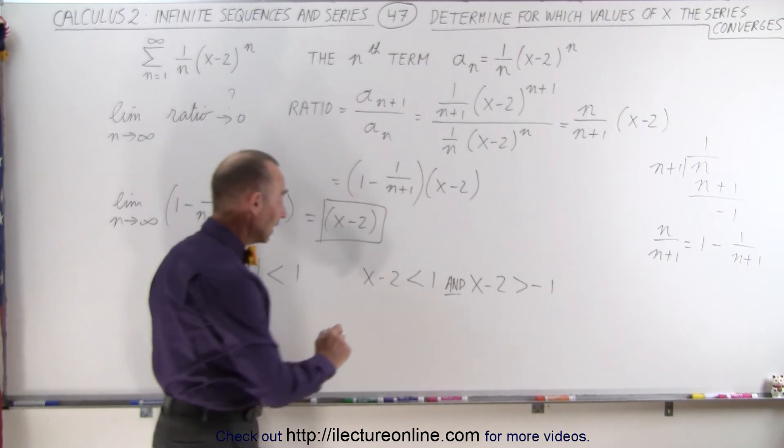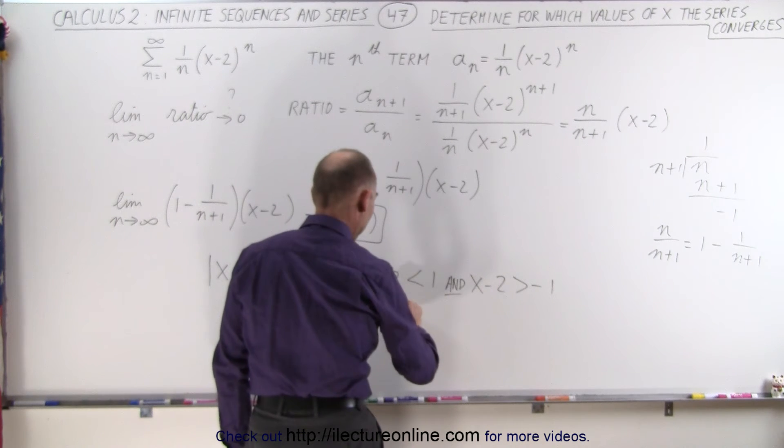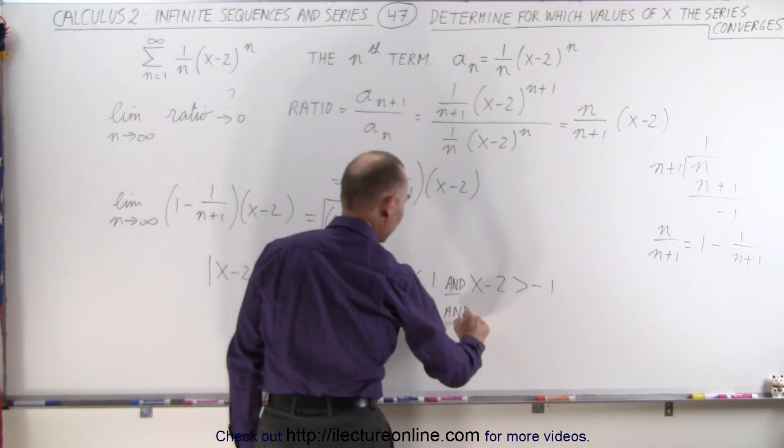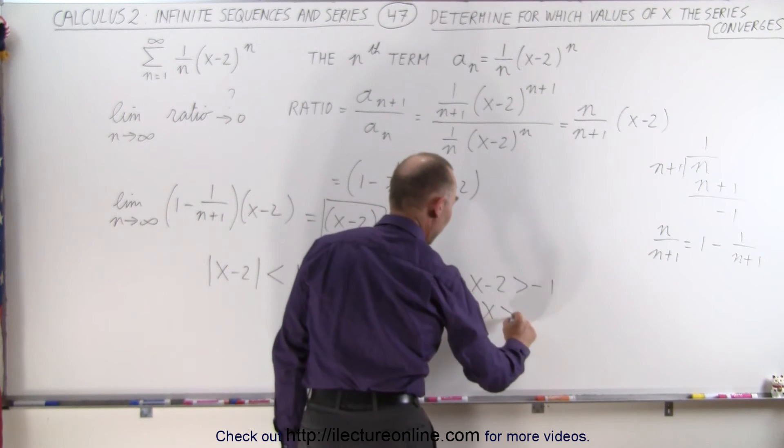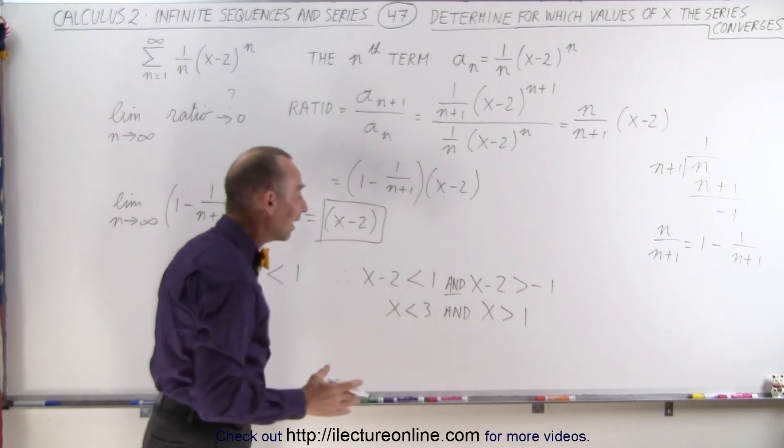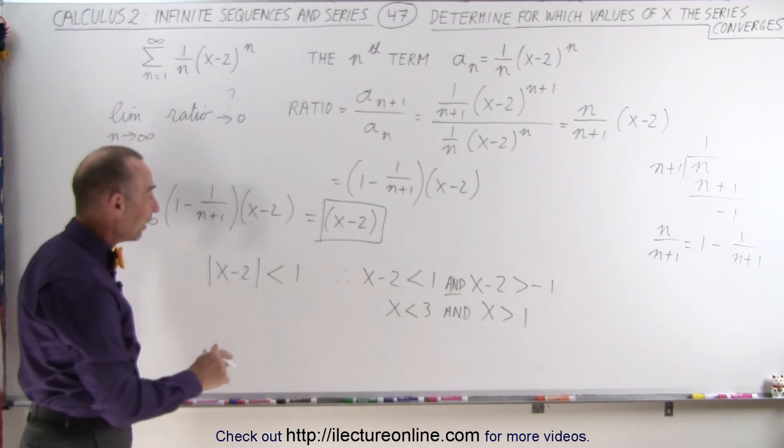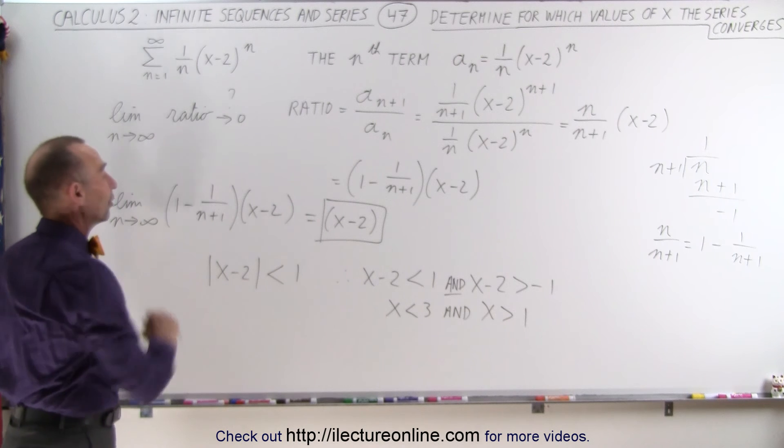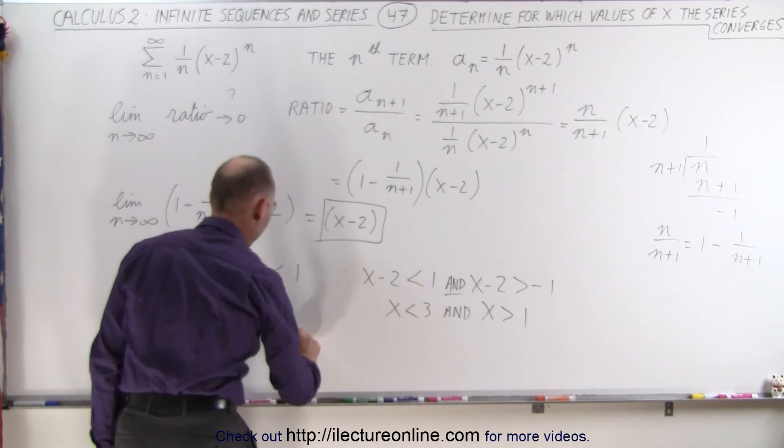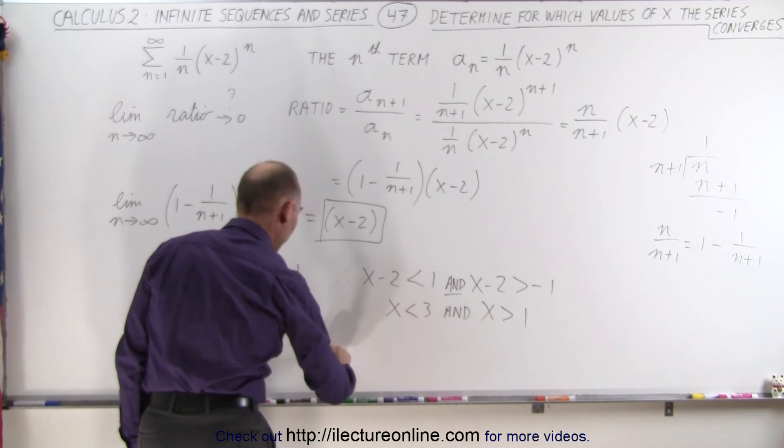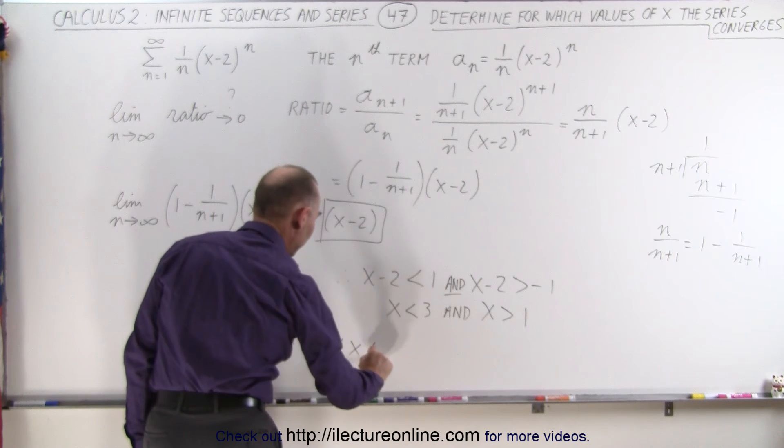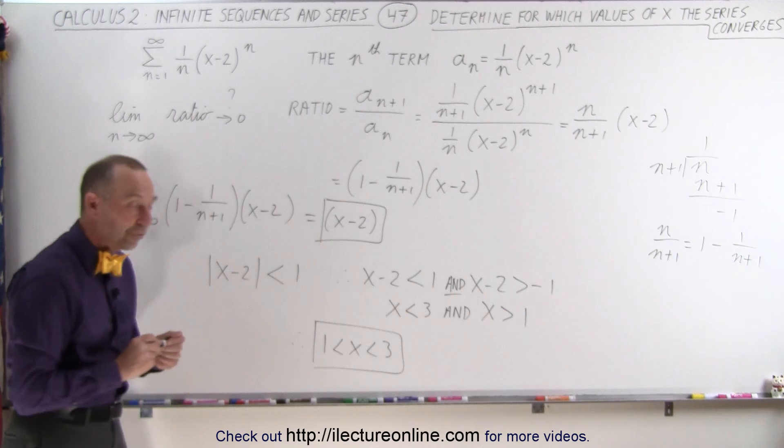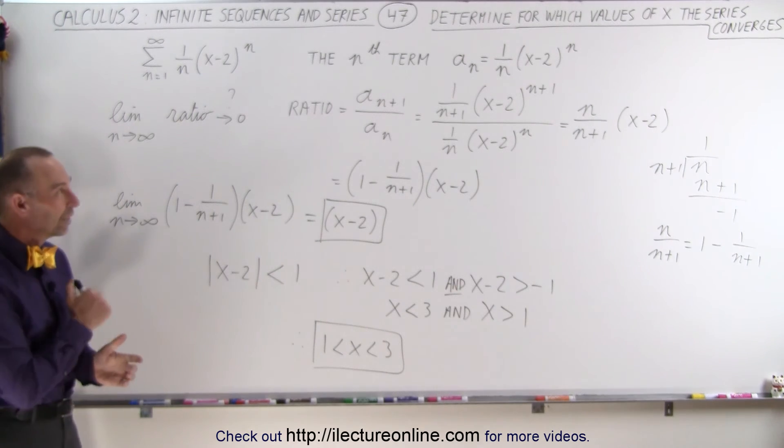If that's the case, we then say that when we bring the 2 across, we get x must be less than 3, and x must be greater than 1, which means that only if the value of x is between 1 and 3, then this series will converge. So therefore, we know that 1 must be less than x, which must be less than 3. And for that range between 1 and 3, for those values of x, this series will indeed converge.